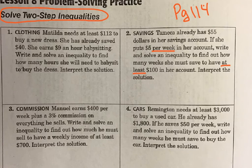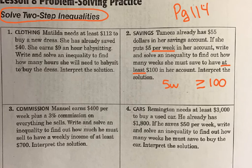Hopefully you're starting to see some patterns. '$5 per week' means it's going to be multiplied, and 'at least' means greater than or equal to $100. We need to fill in the other part: since Tamika already has $55, that's what we add to the $5 per week. So the inequality is: 55 + 5w ≥ 100. We're going to see how many weeks it takes her to reach at least $100.